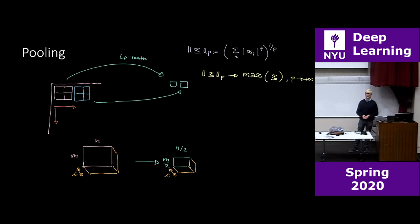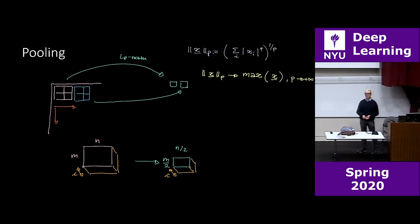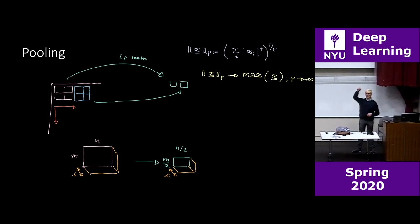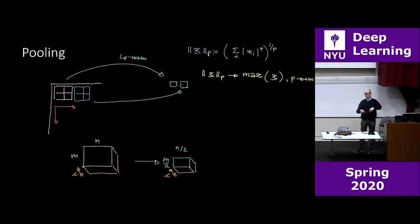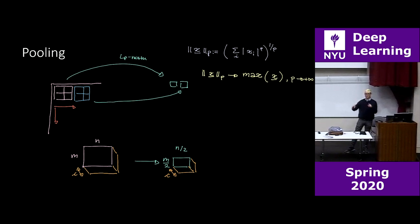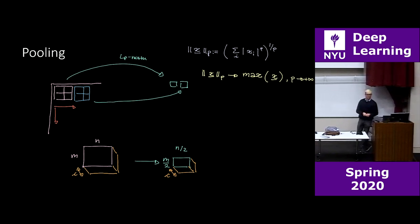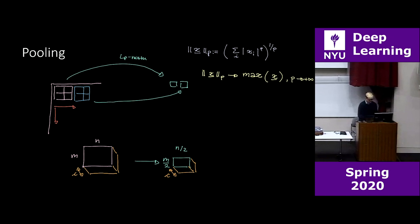Regarding gradients at a branching point: you have the gradient coming down one branch and another gradient coming down from another branch. At a branch point, what happens to gradients? They get added. The two gradients from two different branches get summed together.